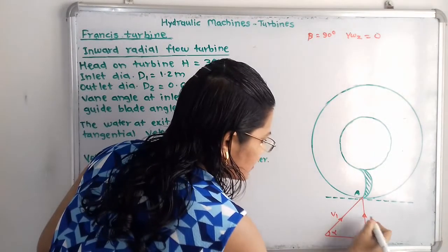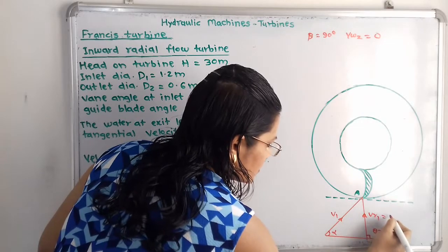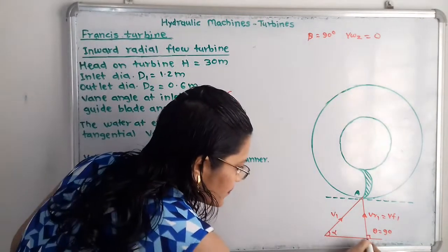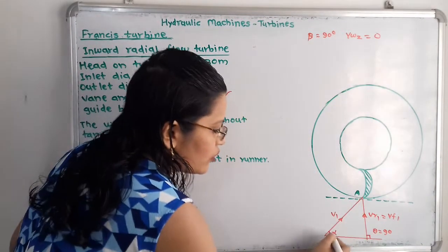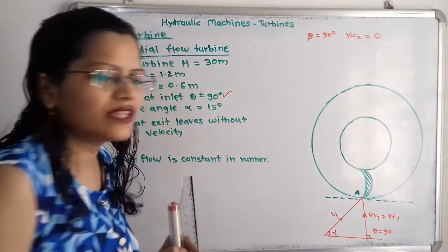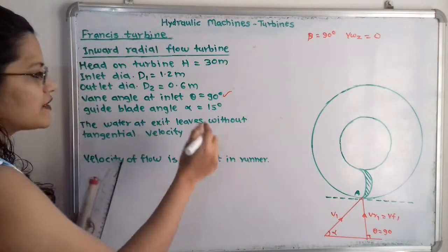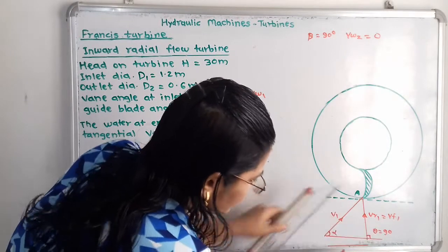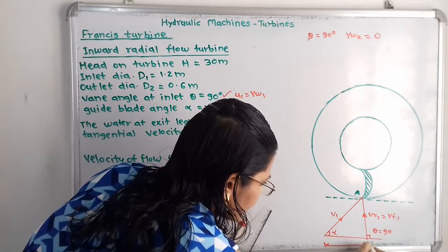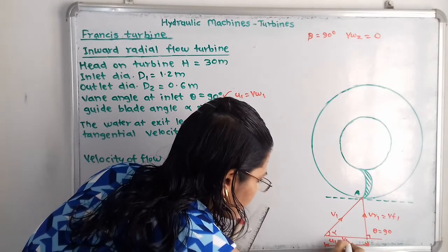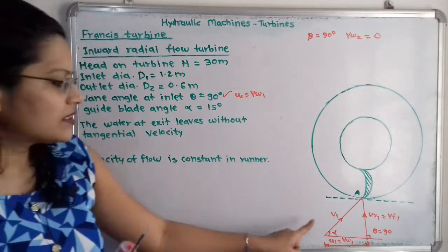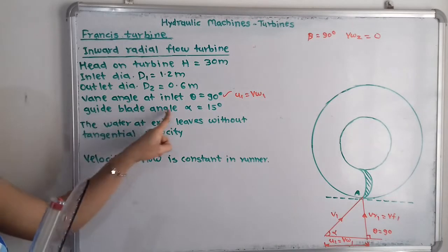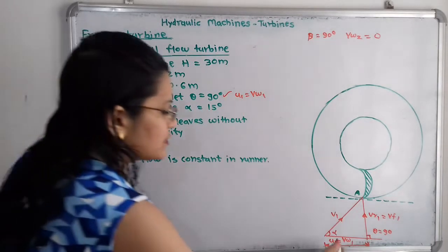Since theta equals 90 degrees, the velocity of flow is along the same vertical line, so Vr1 is equal to Vf1. Along the tangent line we have u1, and when theta equals 90 degrees, u1 is equal to Vw1. This completes the velocity diagram at the inlet. The guide blade angle alpha is given as 15 degrees.